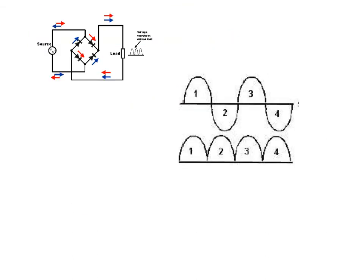You will notice that this circuit doesn't do anything more than really flip sections of the AC electricity upwards, making the voltage positive and making it into direct current because the electricity is flowing in the same direction. But that electricity doesn't really look like the DC we want from a power pack, because it isn't a constant voltage. We're going to have to do something extra to achieve that.